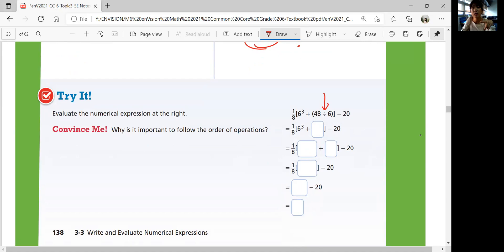48 divided by 6 is going to be the first one. 48 divided by 6 is 8. 8 times 6 is 48. And then you need to solve inside the parentheses.